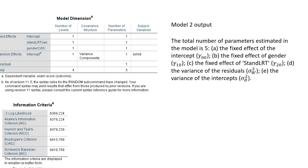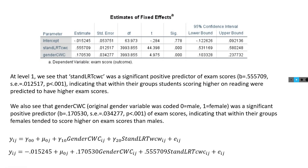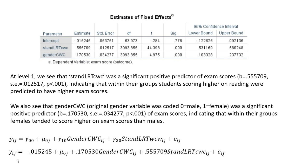Looking at the model dimension table, we are now estimating five total parameters: the fixed effect for the intercept, standardized reading test score, and gender, plus the variance estimate for the intercept and the level 1 residual variance. In the estimates of fixed effects, we now see regression slopes for both predictors — standardized reading test score and gender — and both are positive and statistically significant. Students who scored higher on the reading test also tended to do better on exam scores, and females within schools tended to perform better on exam scores than males.